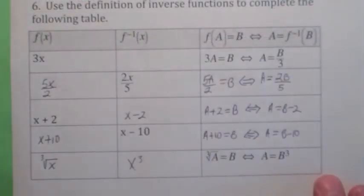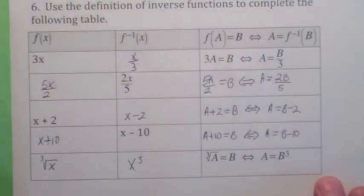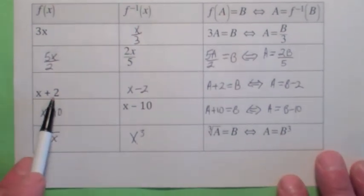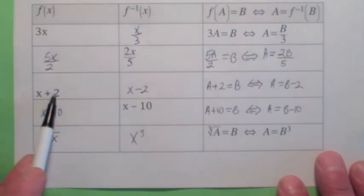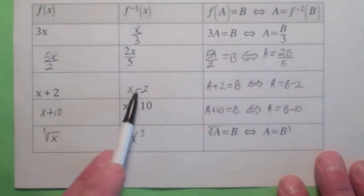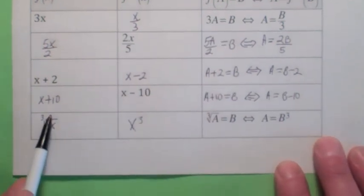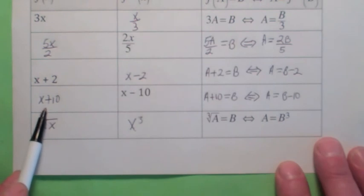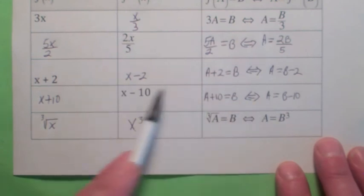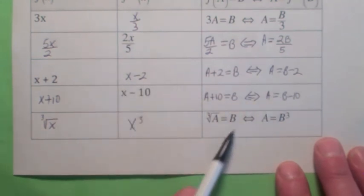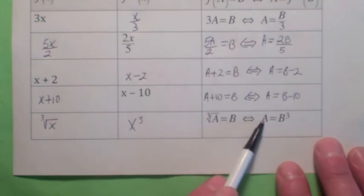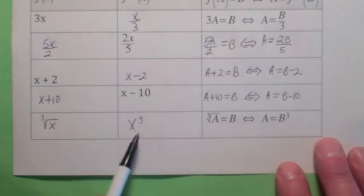For the third row, if the function is x + 2, the inverse function is x − 2. So f(a) = a + 2 = b if and only if a = f inverse of b = b − 2. If the inverse function is x − 10, then the function is x + 10, so f(a) = a + 10 = b, and f inverse of b = b − 10. For the last one, f(a) = cube root of a = b, if and only if a = b cubed, so f inverse of x is x cubed.